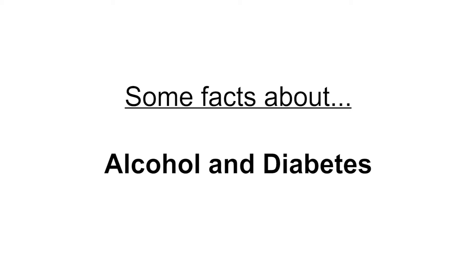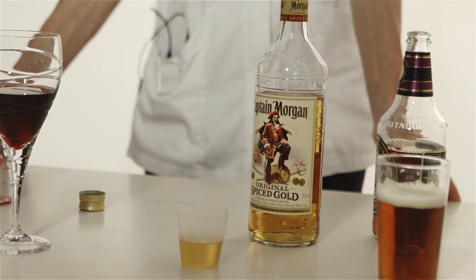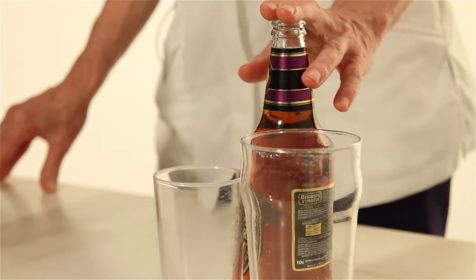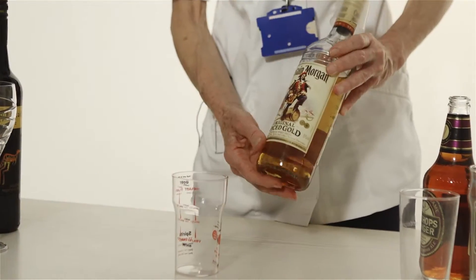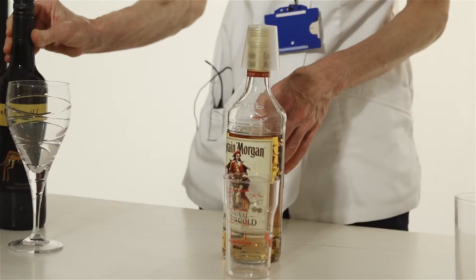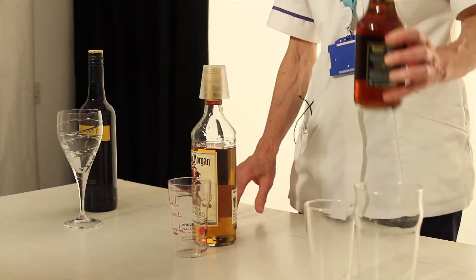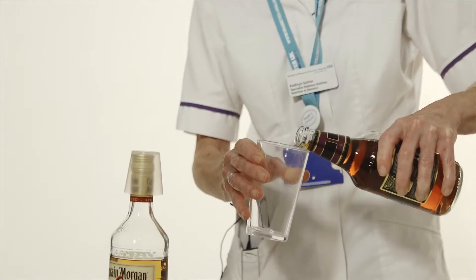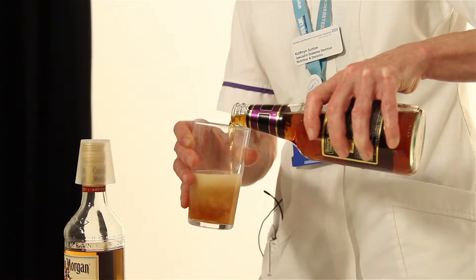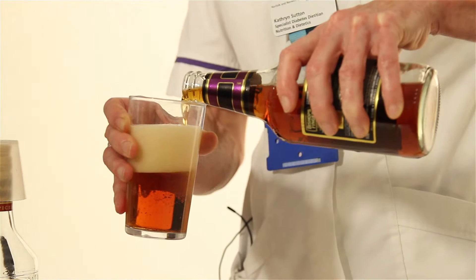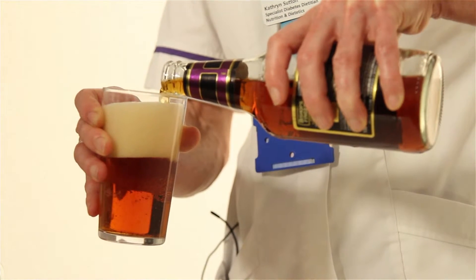It might be helpful to take some examples of alcoholic drinks and show you what a unit of alcohol looks like. On the table here we've got some beer and some rum, representing various spirits — it could be whiskey, gin, etc. — and I've also got a bottle of wine. One unit of alcohol as beer would be about half a pint if you're drinking a reasonably weak beer, by which I mean three to four percent.